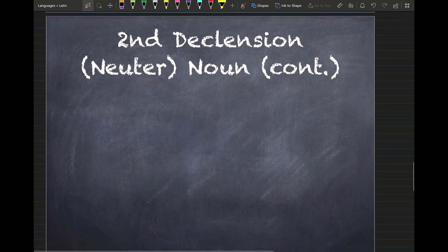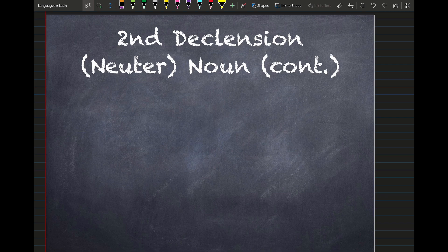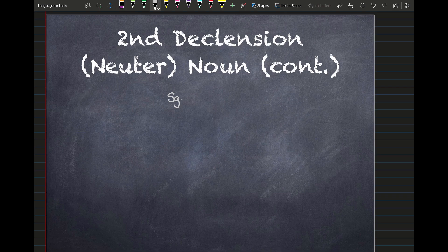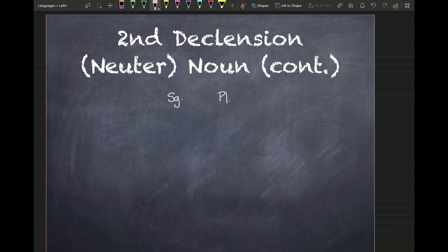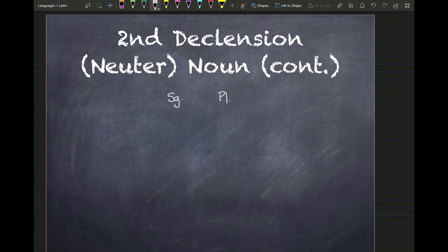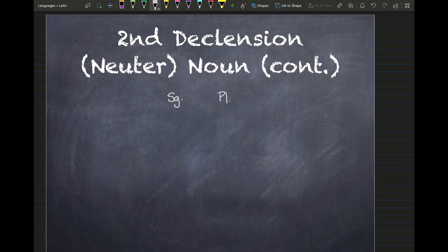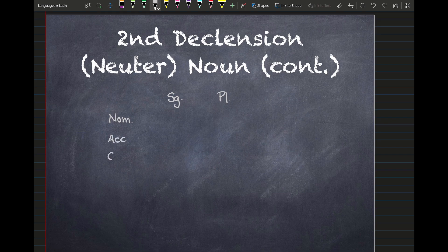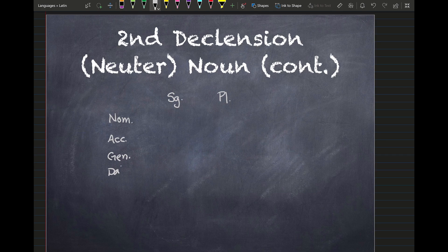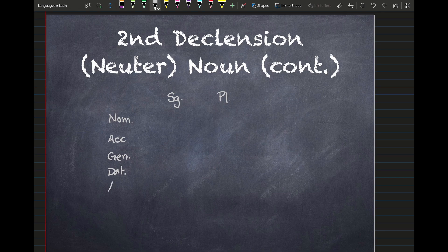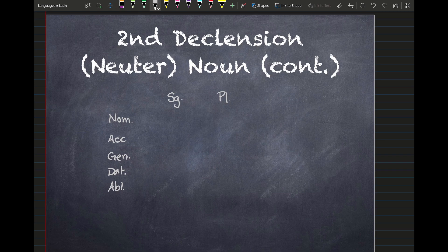All right. So in order to approach this, we need to get our chart going again. Remember, cases not only tell us the function of the noun in the sentence, but they also tell us the number, like if they're singular or plural. So you're like, why is he repeating himself over and over? Remember, because repetition is key in language learning. It is key. You always have to redo stuff all the time in order for the language to stick. You're using a different part of your brain. All right. I'll get our chart going here. Nominative, accusative, genitive, dative, ablative. So this is the one we're worried about right now.